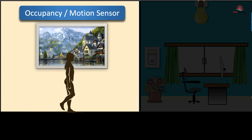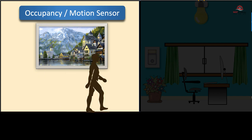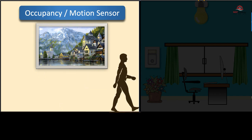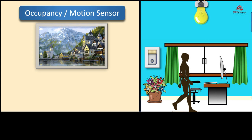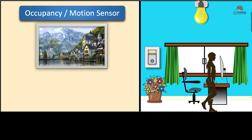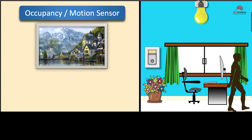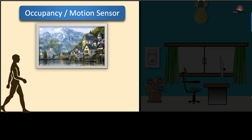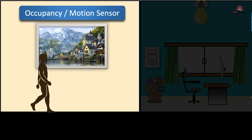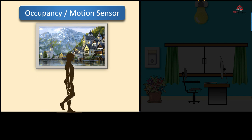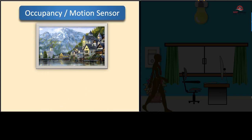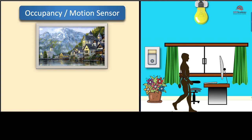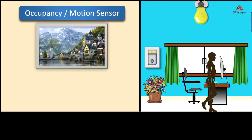Occupancy or motion sensors. These sensors detect the presence or absence of people in a room or area. They are commonly placed in spaces such as offices, meeting rooms, restrooms, and hallways to control lighting, HVAC systems, and security systems based on occupancy.